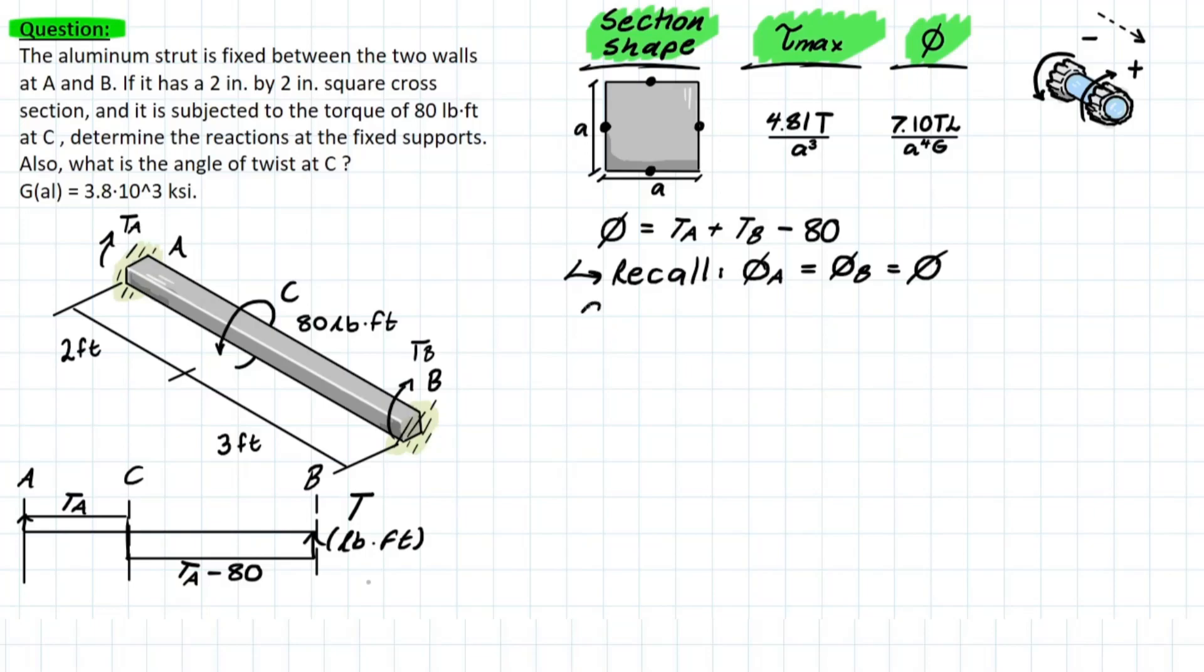Now we know, based on our recall, that the angle of twist at A with respect to B is going to equal zero. Therefore, if we're taking the cumulative rule of the angle of twist formula, we're going to have the angle of twist between A and C plus the angle of twist between C and B. We're going to be using these formulas to solve it.